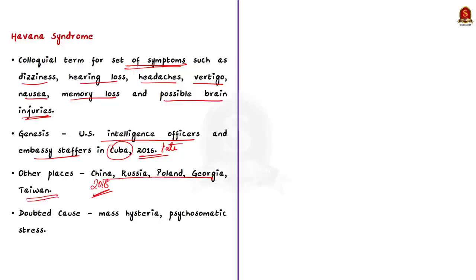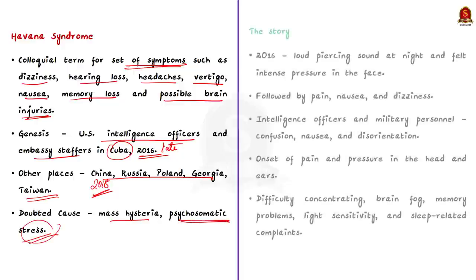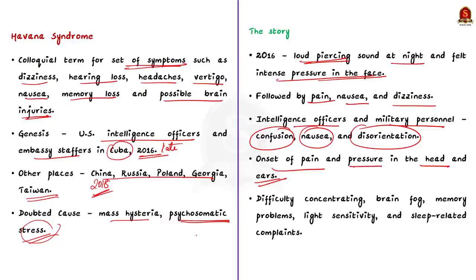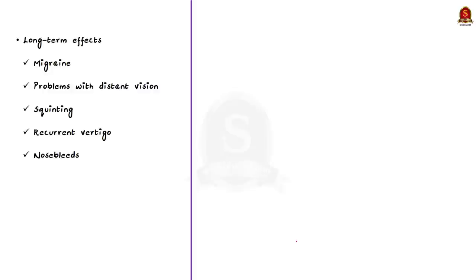It was initially dismissed as a mass hysteria or a reaction caused by psychosomatic causes such as stress. In late 2016, deployed diplomats heard a loud piercing sound at night and felt intense pressure in the face. It was followed by pain, nausea, and dizziness. In the years that followed, many intelligence officers and military personnel reported symptoms such as confusion, nausea, and disorientation. It typically reported with the onset of pain and pressure in the head and ears. They reported other symptoms such as difficulty concentrating, brain fog, memory problems, light sensitivity, and sleep-related complaints. The long-term symptoms of Havana syndrome includes migraines, problem with distant vision, squinting, recurrent vertigo, and nosebleeds.